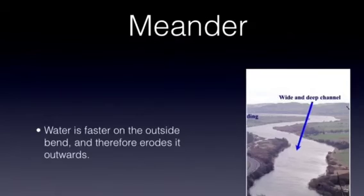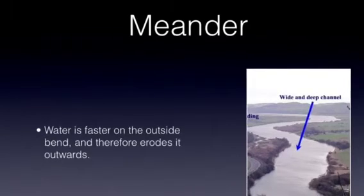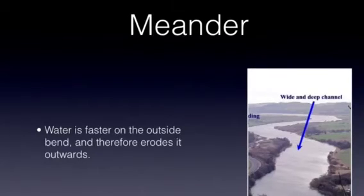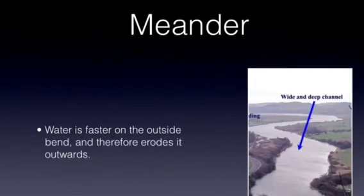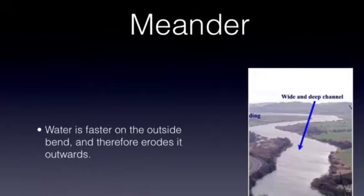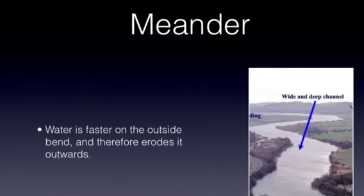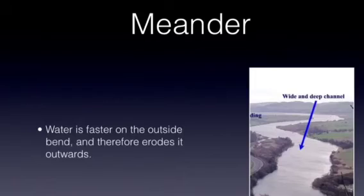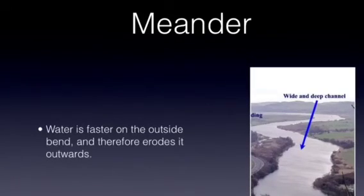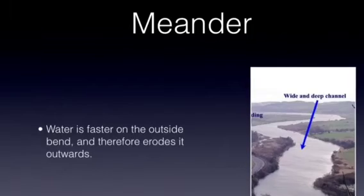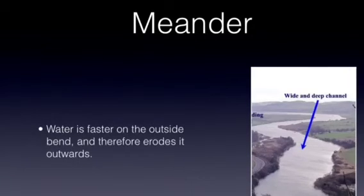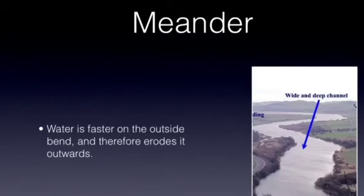As the water enters the meander it is faster on the outside edge because it is deeper and has a larger hydraulic radius, so there is less friction acting upon the water. On the inside bend of the meander it is shallower and has a smaller hydraulic radius, so more friction from the river's bed and bed load acts upon the water, slowing it down. On the outside of the bend a steep river cliff or bluff forms where the processes of hydraulic action and abrasion get to work eroding the outside bend.